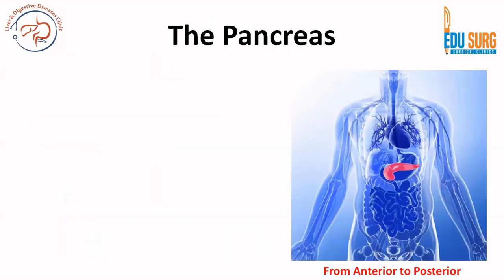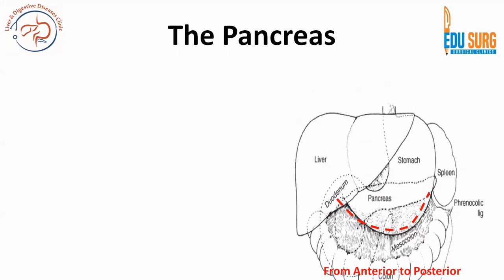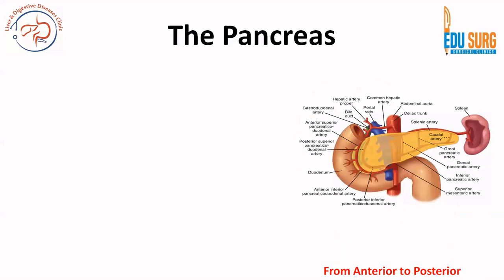Let us look at the pancreas as we go inside the abdomen, from anterior to posterior. When we open the abdomen, the pancreas is not visible — it is covered by various organs. The organs covering the pancreas include the stomach, mesocolon, and colon; all of these structures are anterior to the pancreas. The red dotted line shows the incision that we give in the lesser sac, below the gastroepiploic arcade. Once you incise these layers of omentum, that is when you will start seeing the pancreas.